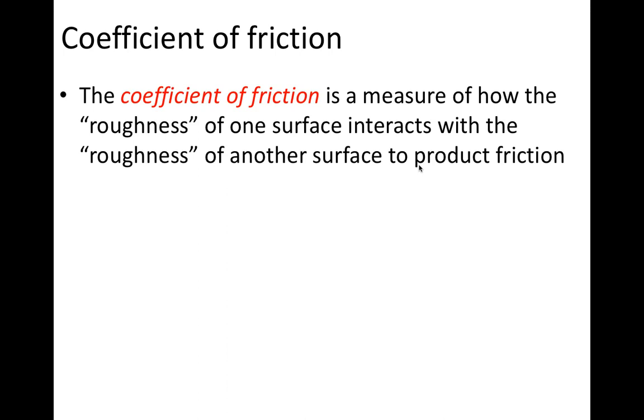So the coefficient of kinetic friction is a measure of how the roughness of one surface interacts with the roughness of another surface. It depends on the surface materials, on the nature of the surface materials. The rougher the surfaces, the greater the value of the coefficient of kinetic friction will be between the two surfaces. But it's always associated with a pair of surfaces, not just a single type of surface.